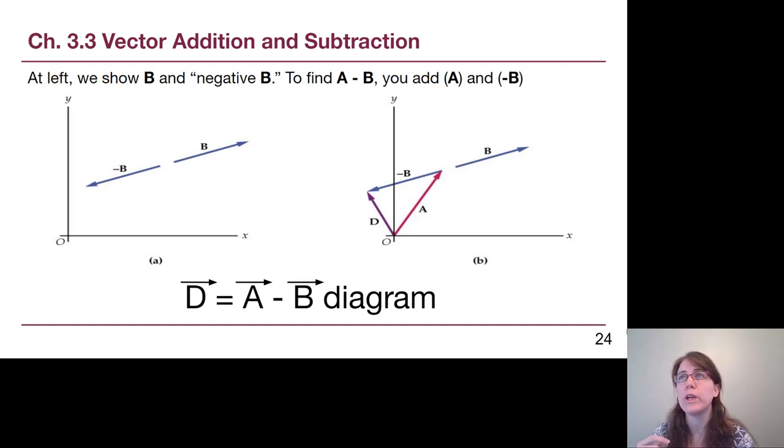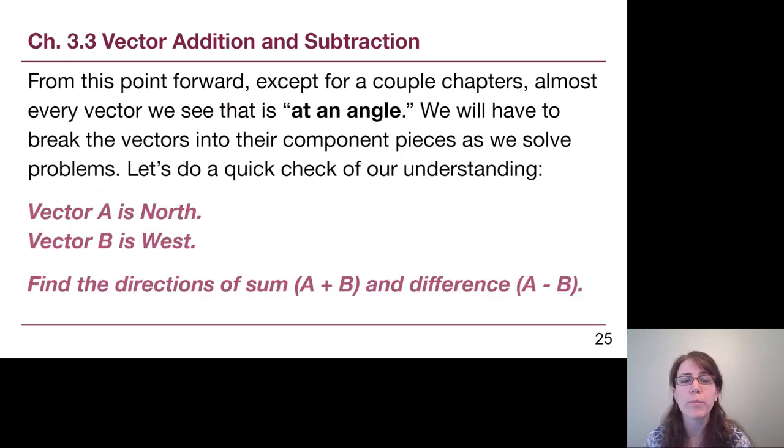When we think about the idea of vector subtraction, that's not really possible, but what we can do is create a new vector that is the opposite or negative of a vector. So if we're trying to find vector A subtracted vector B, what we really are doing is vector addition with all of the same processes of breaking things into components, head-to-tail method, all of that, but using the idea of negative B instead.